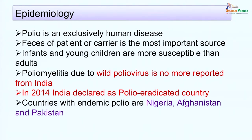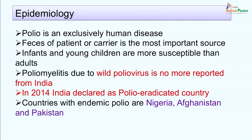Polio is an exclusively human disease with no extra-human reservoir. Feces of patients or carriers is the most important source of infection to the community. Infants and young children are more susceptible than adults. In India, more than 80 percent of children below 5 years of age show antibodies to poliovirus. Poliomyelitis due to wild poliovirus is no longer reported from India; in 2014, India was declared polio-free. However, vaccine associated and vaccine derived poliomyelitis cases are still reported. The only countries with endemic poliomyelitis are Nigeria, Afghanistan, and Pakistan, and wild poliovirus may be imported from these neighboring countries.